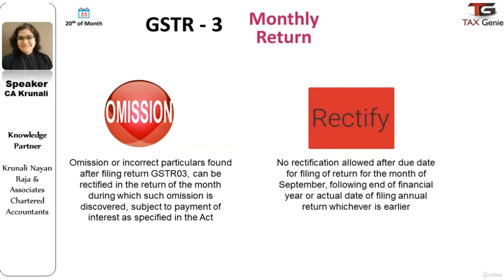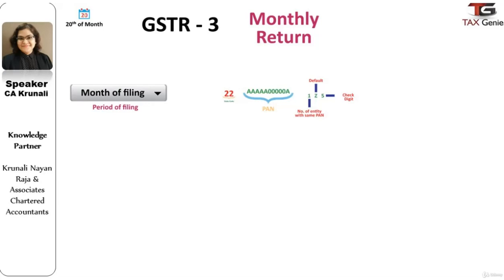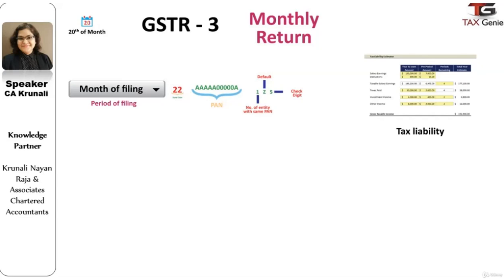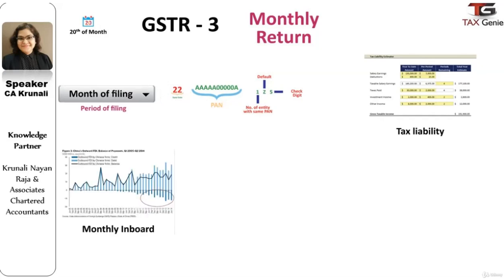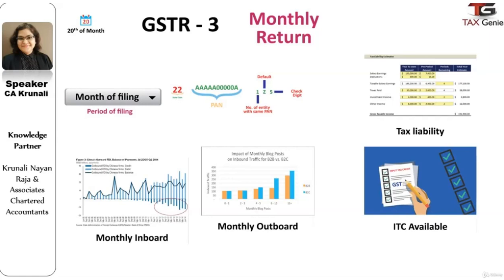No rectification would be allowed after the due date for filing of the return for the month of September following the end of the financial year, or the actual date of filing of the annual return, whichever is earlier. GST Return 3 would also include details like basic details of the taxpayer, period to which the return pertains, details of monthly outward supply, details of monthly inward supply including reverse charge mechanism, import, intrastate and interstate supplies, total tax liability for the month including liability under reverse charge, and the net input tax credit available.